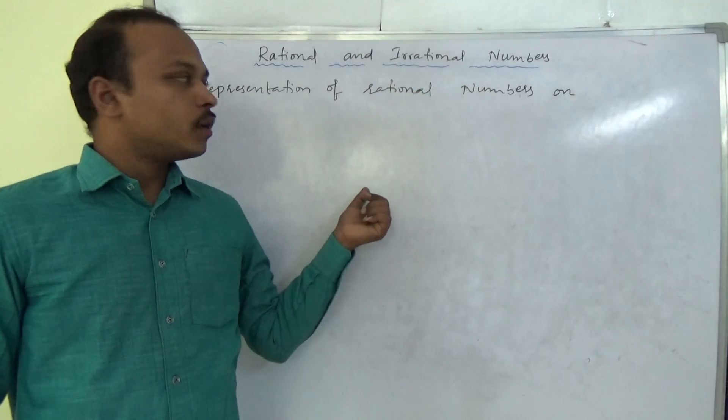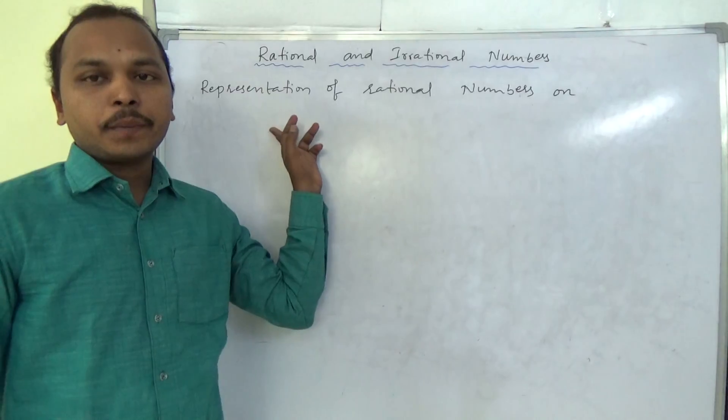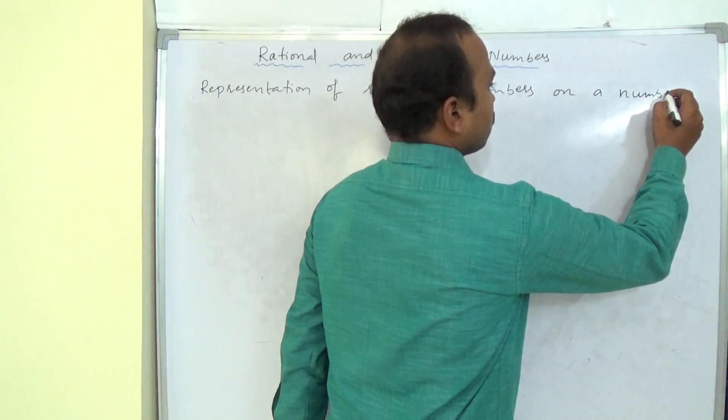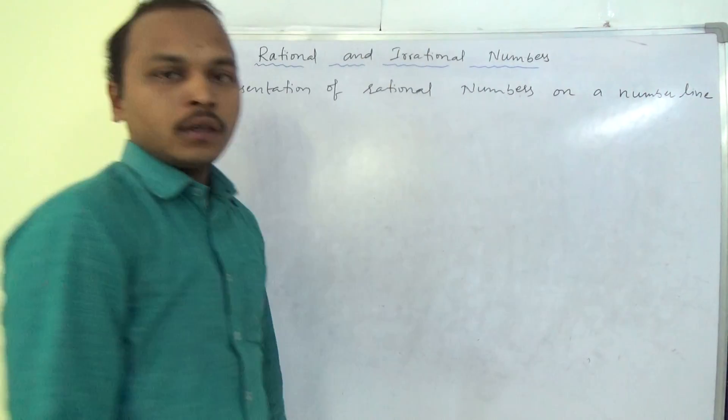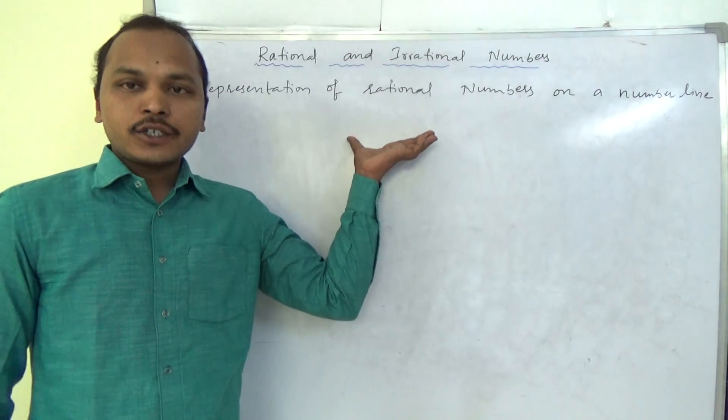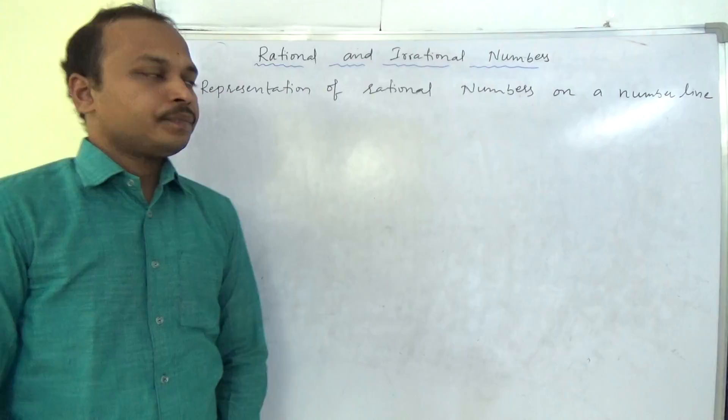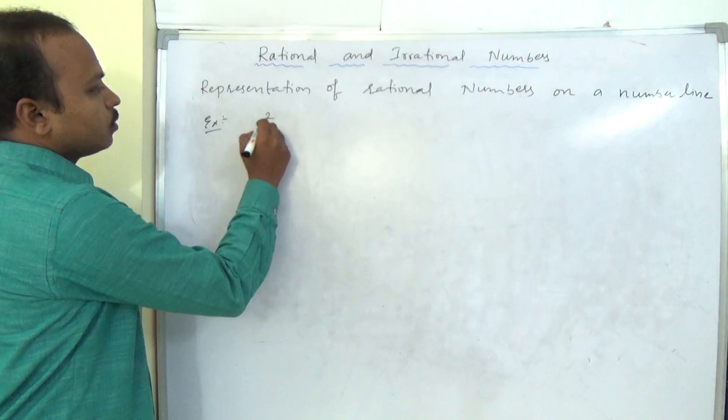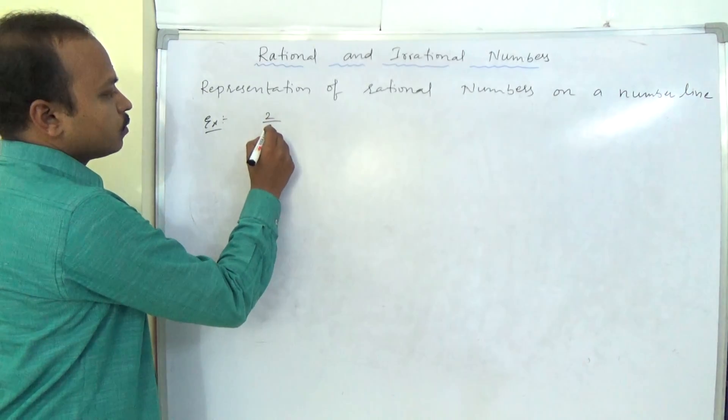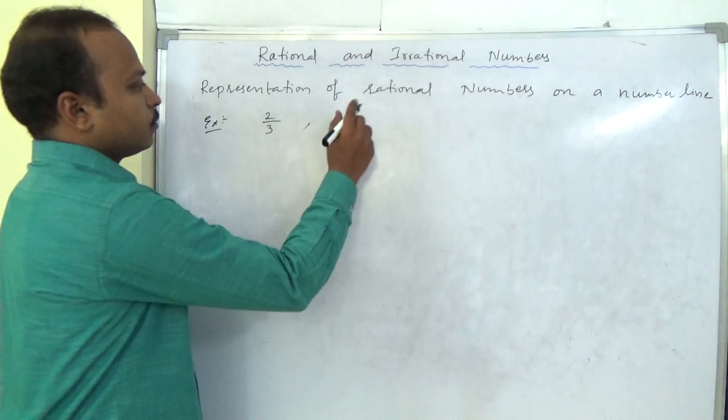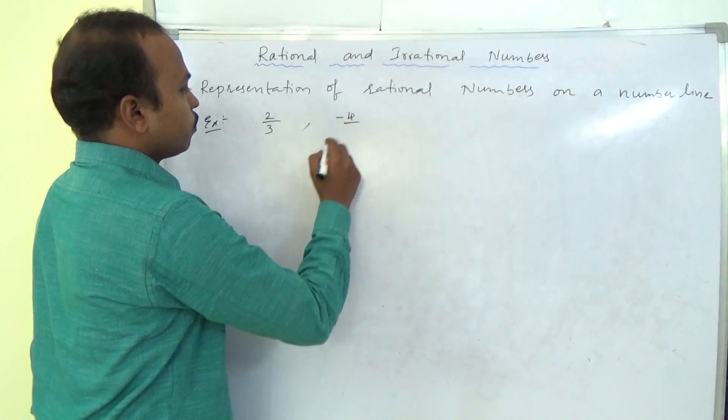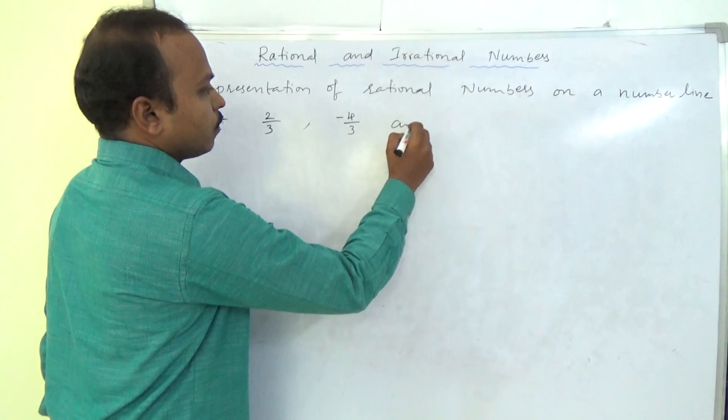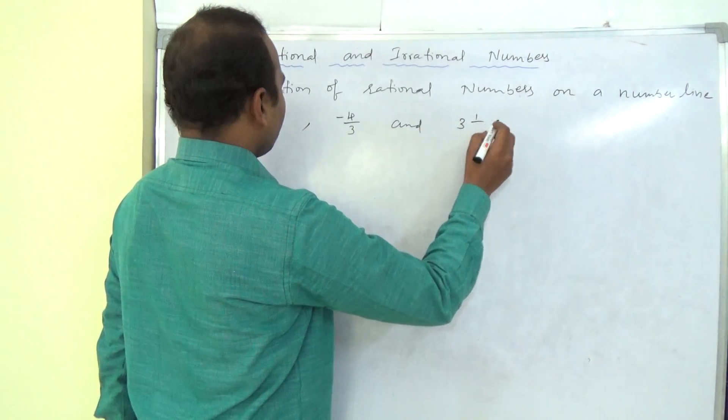In rational and irrational topic, we will discuss now about representation of rational numbers on a number line. How to represent a rational number on a number line, we will see now. So I am taking three examples. For example, 2 by 3 and minus 4 by 3 and one more is 3, 1 by 2.